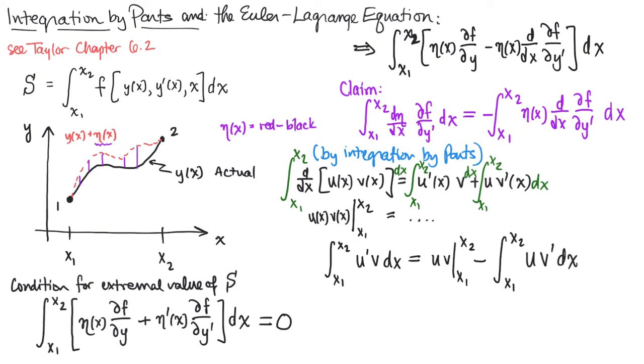And so let's see how that compares to this purple equation. We have integral of derivative times a new function is equal to minus the not-derived version of eta times the derivative of the second function. So we can see that in this case, if we set u to be eta and we set v to be partial of f with respect to y prime, then the equivalence holds as long as we can somehow get rid of this so-called boundary term.